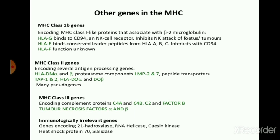Let's talk about the MHC class 3 genes, which encode complement proteins. The MHC class 3 genes encode complement proteins secreted by the immune system against the antigen, such as C4A, C4B, C2, and factor B, as well as tumor necrosis factor alpha and beta. There are also immunologically relevant genes encoding 21-hydroxylase, RNA helicase, casein kinase, heat shock protein 70, and slidase. These other MHC genes play a key role for the recognition of self and non-self molecules in the human being.